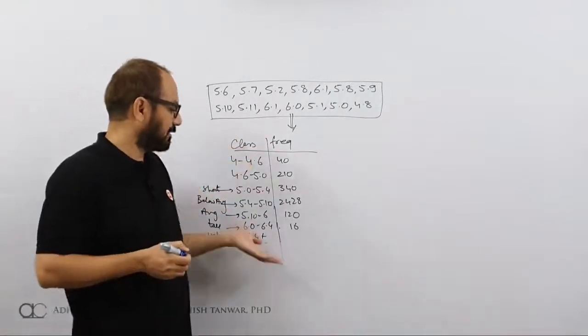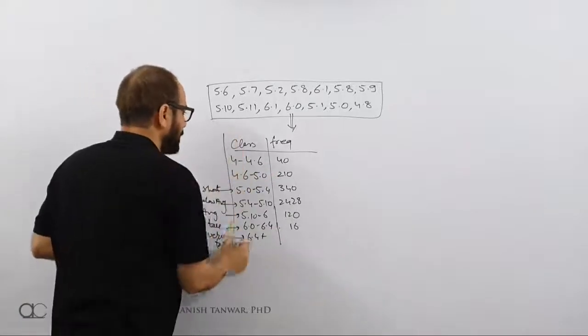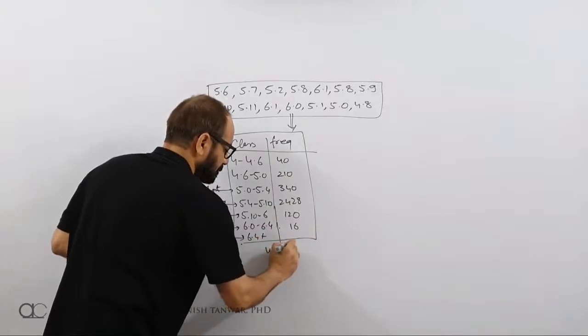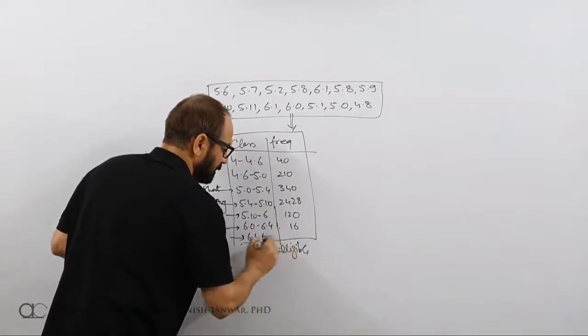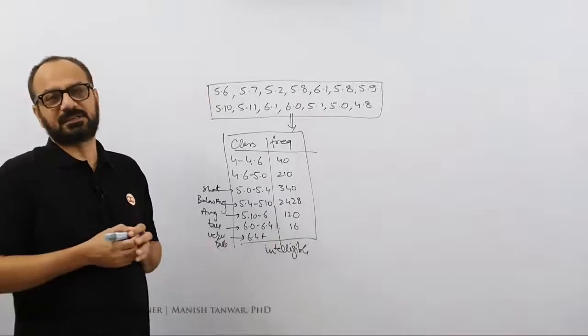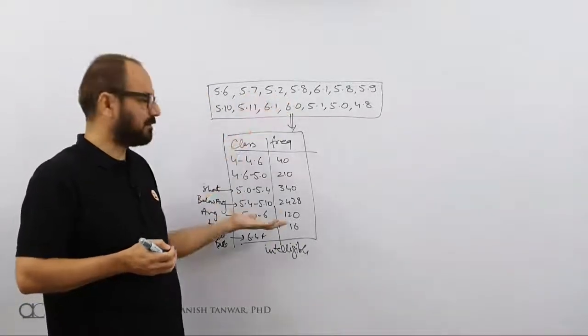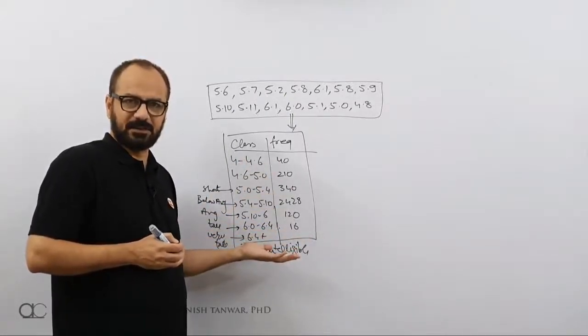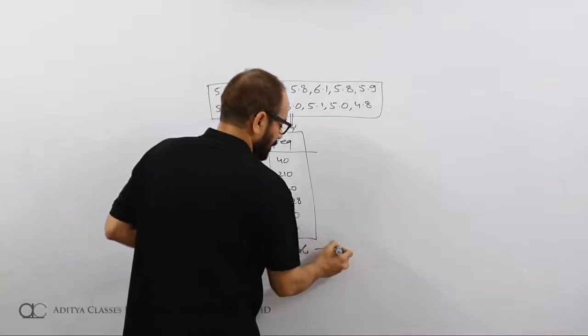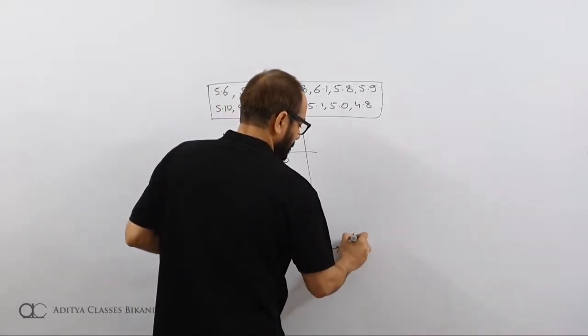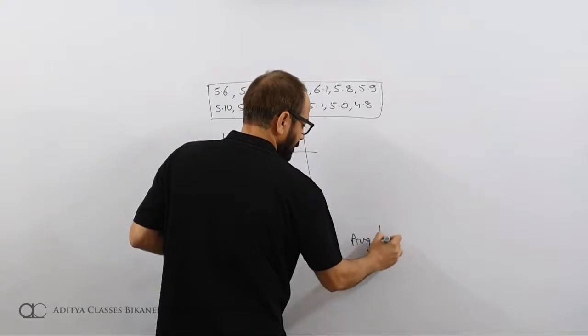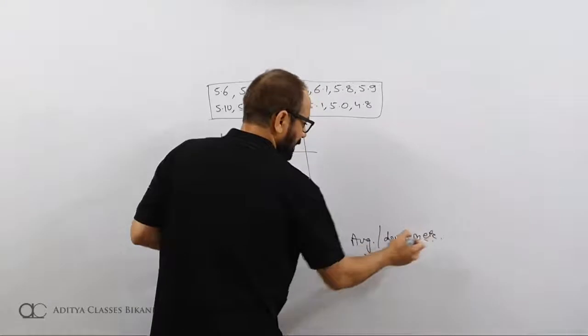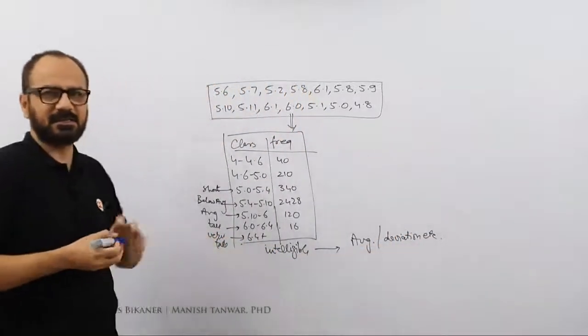But now by converting it into classes, by converting it into a proper table, I have made it more intelligible. Now it is intelligible. This is what statistics does. It gathers data, it converts it into intelligible data. And once I have data classified or organized into tables, I can go ahead and find out averages, deviations, etc. Depending on the query, I will find out different measures.